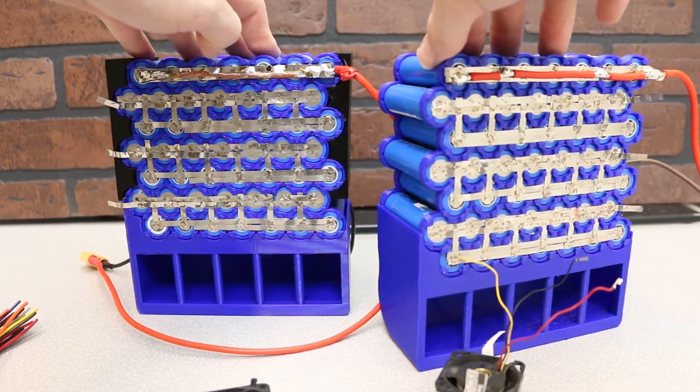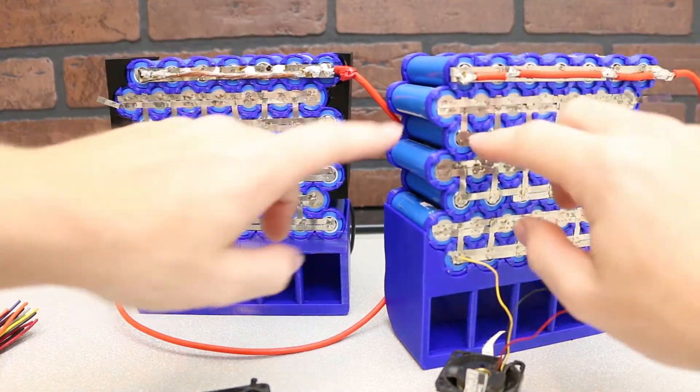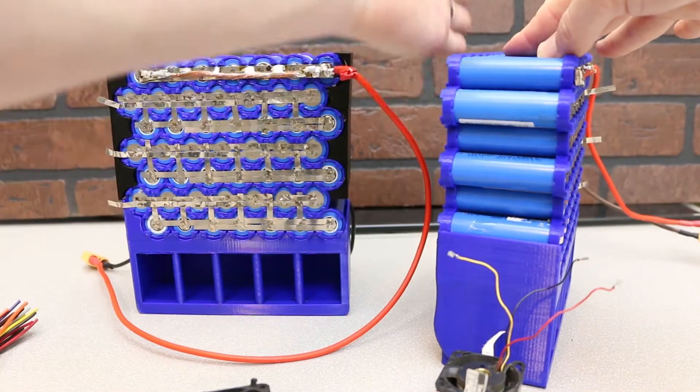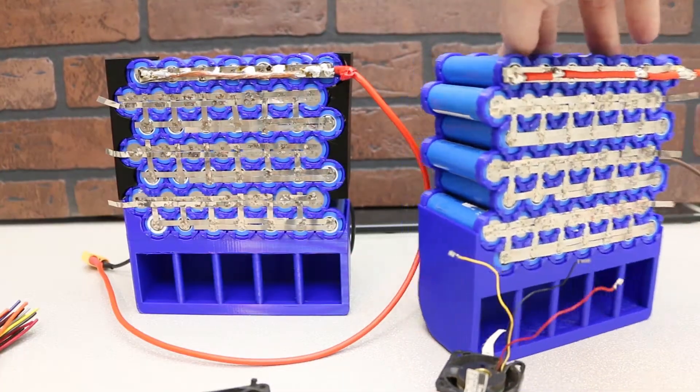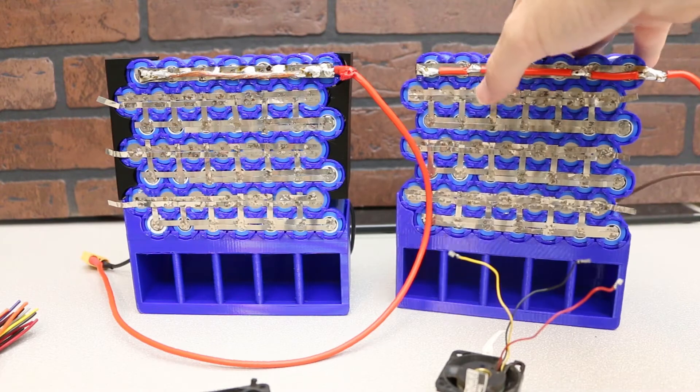Kilowatt hour packs are just all squished together similar to this, but I don't think there's any space and they just run cooling like on one side. It might even be refrigerant. I can't remember, I've only seen the patents once.